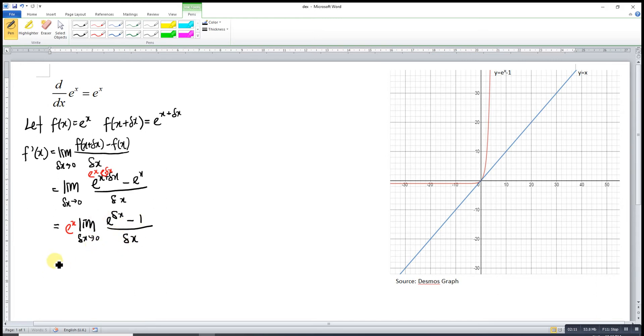So to solve for this limit, we can refer to the graph that we have. For the red line is the numerator, which is e^x minus 1. And for the denominator, we let it be y equal to x. And what we want is approaches 0. So we just observe the one that near to 0.